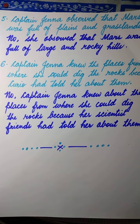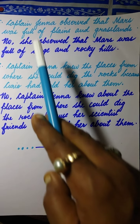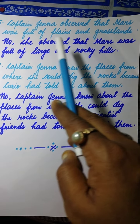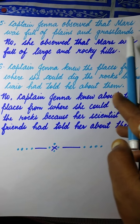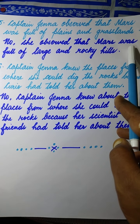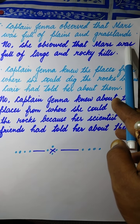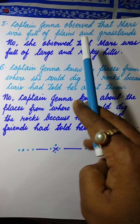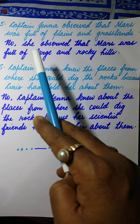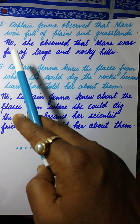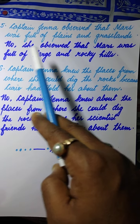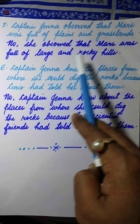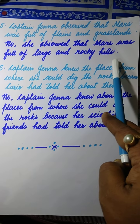Just see number 5: Captain Gina observed that Mars was full of plains and grassland. This sentence is wrong. When we correct it, we write: She observed that Mars was full of large and rocky hills.